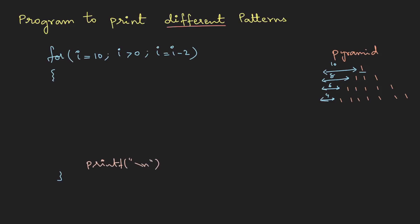Inside the first line we need to print 10 spaces. I'll use a loop where j starts at i (initially 10), iterates while j is greater than 0, j--. Inside we printf just a space. Initially it puts 10 spaces, then 8, then 6, then 4 — the space is reducing.